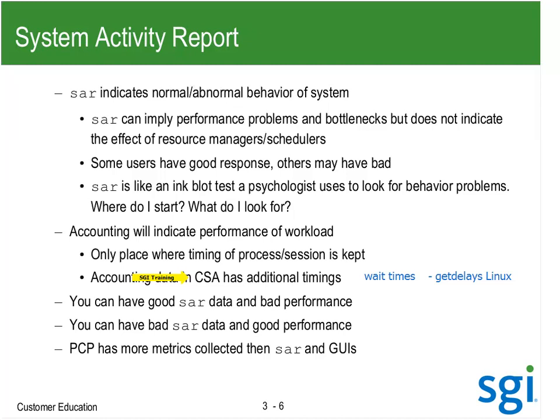You could have good SAR data and bad performance, and bad SAR data and good performance. It depends on what the bottlenecking resource is. Everything could be asleep on a sleep lock. PCP has more metrics than SAR — basically everything SAR can get to with a GUI, plus more. Tomorrow we're going to start using Performance Co-pilot.